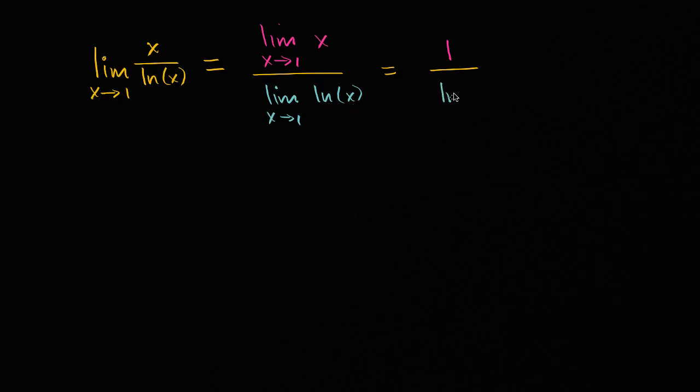So this is just going to be the natural log of one, which of course is zero. e to the zero power is one.